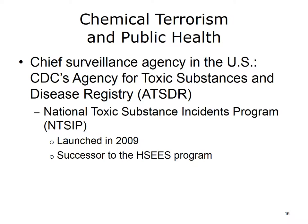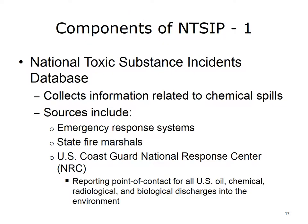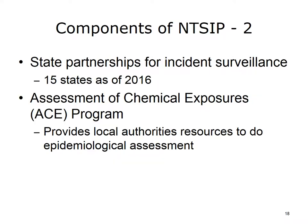The National Toxic Substance Incidents Program, housed at the Agency for Toxic Substances and Disease Registry, was created in 2009 and replaced the Hazardous Substances Emergency Events Surveillance Program. Among its purposes is to prepare for and mitigate risks related to chemical terrorism. The first component is the National Toxic Substance Incidents Database, a repository for information related to chemical spills that aggregates data from emergency response teams, state fire marshals, and the National Response Center. Other components include state partnerships and the Assessment of Chemical Exposures, or ACE, program, which provides training, materials, and support to local authorities to aid in assessing incident impact.